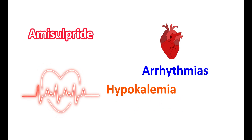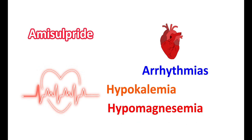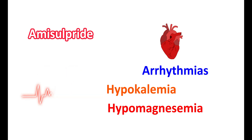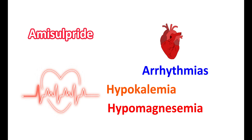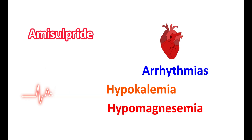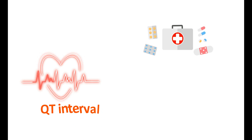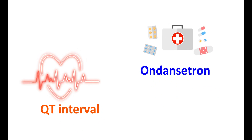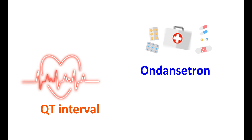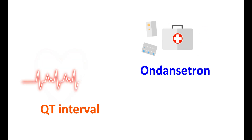Electrolyte abnormalities such as hypokalemia (low potassium) and hypomagnesemia (low magnesium) can also increase the risk of QT prolongation. People with congestive heart failure may also have an enhanced risk. In all such cases, amisulpride should be used carefully with frequent ECG monitoring. Certain medications like ondansetron can also increase the QT interval.